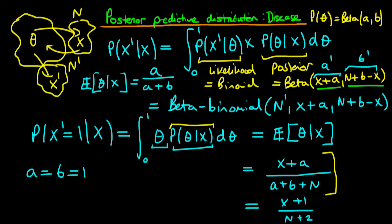The prior parameters a and b can strongly influence the predictive probability, especially with a low sample size. Increasing b weights the distribution towards a relatively low probability of having the disease — reflecting the choice of a high b in the prior beta distribution — while increasing a has the opposite effect, weighting towards a higher probability for the new person. However, as n increases, the influence of a and b becomes quite small because they are likely small numbers compared to n.